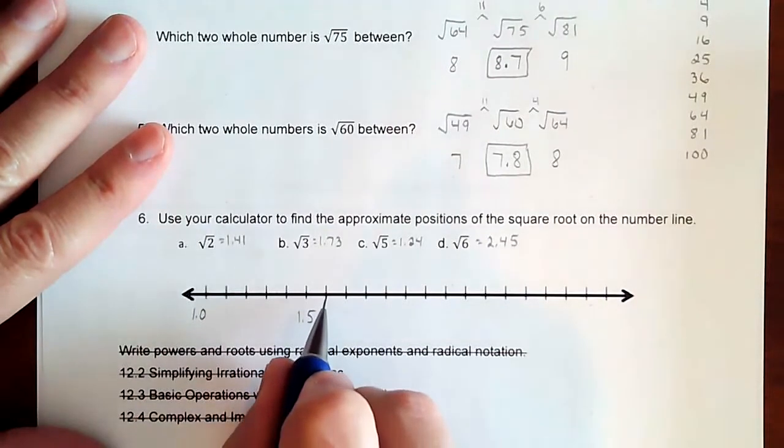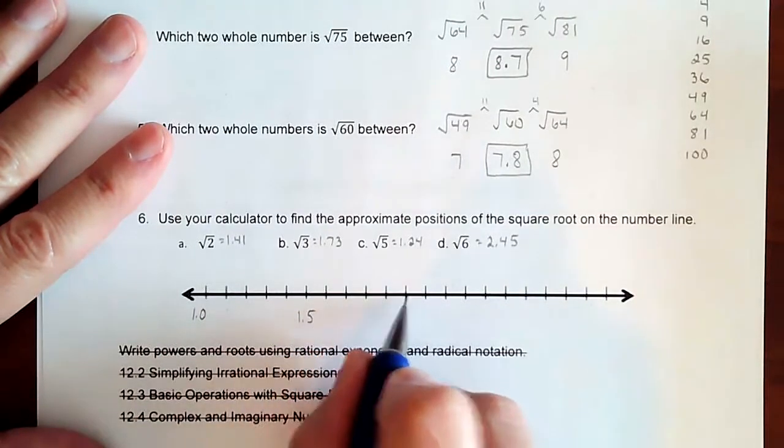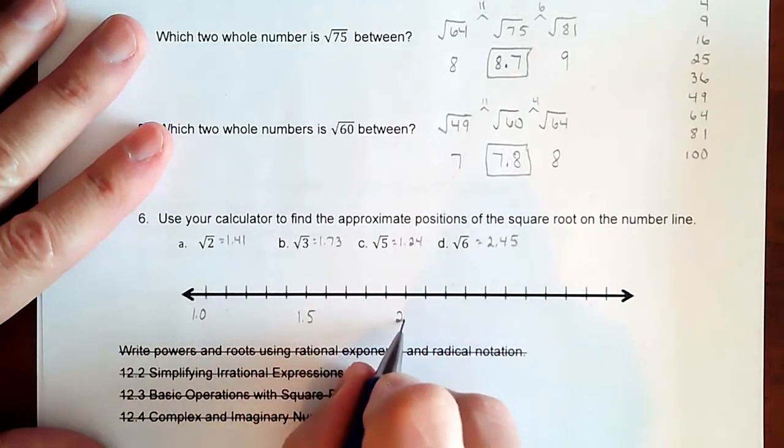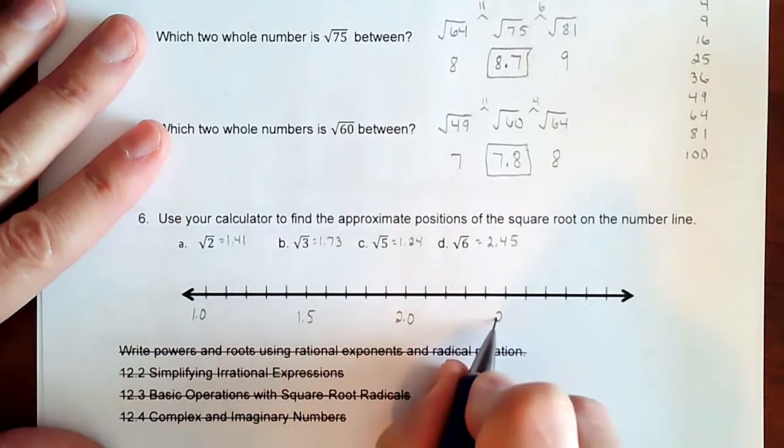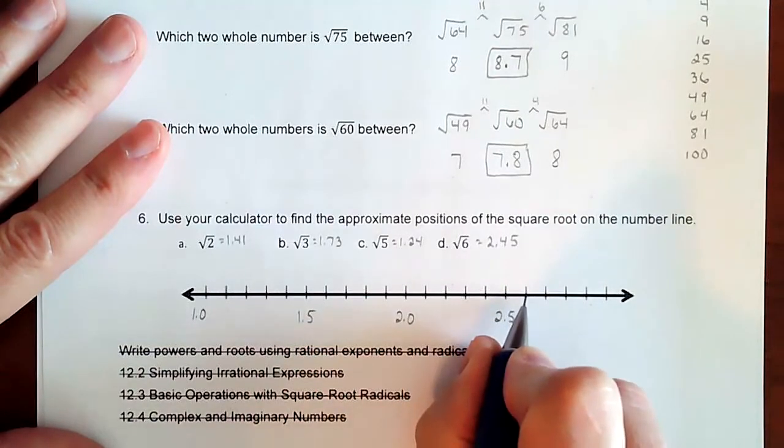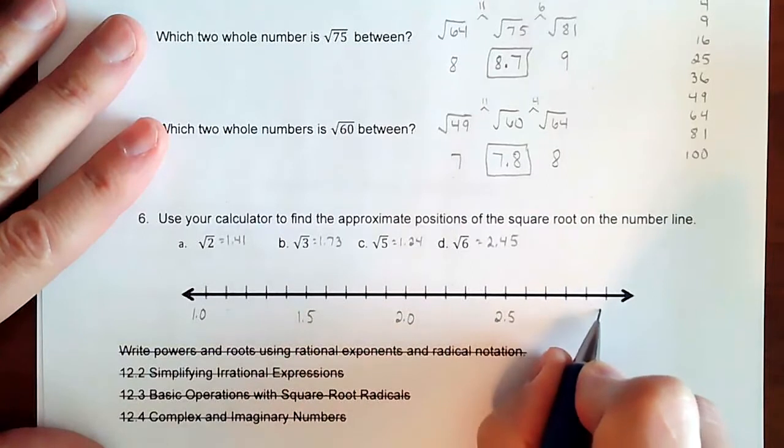So 1.5, 6, 7, 8, 9, 2.0, 2.1, 2, 3, 4, 5. And then 2.6, 7, 8, 9, 3.0.